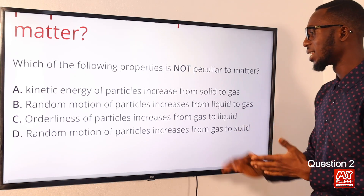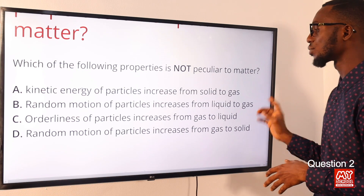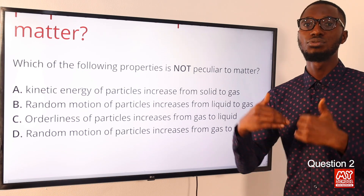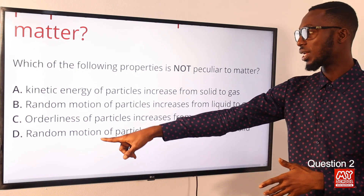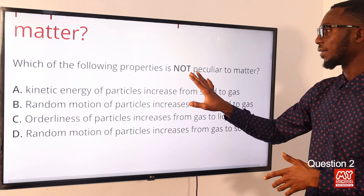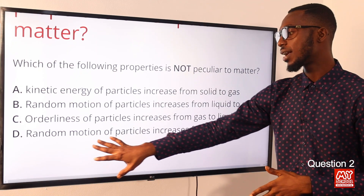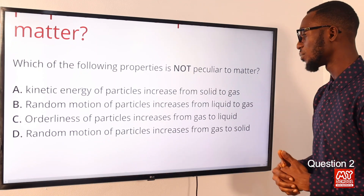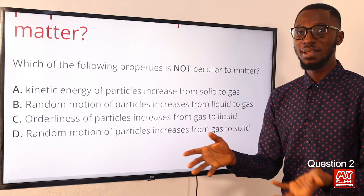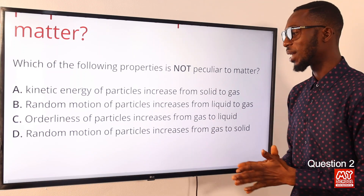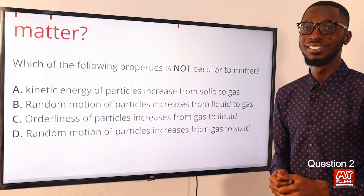Option D: random motion of particles increases from gas to solid. This is incorrect. The random motion of particles actually increases from solid to gas. So the correct option — the exception, the 'not' — is option D. Option D is the correct answer.